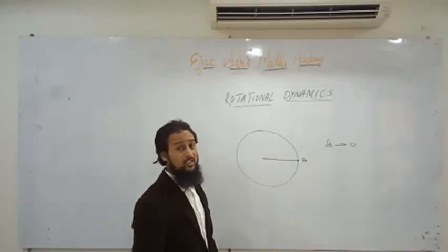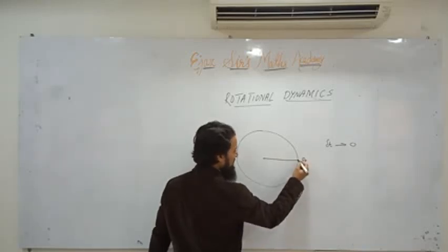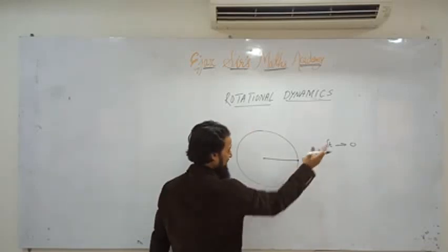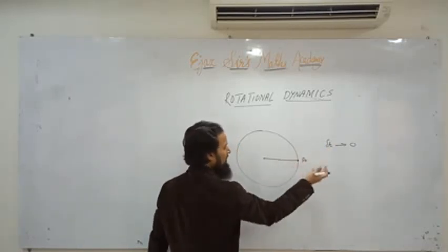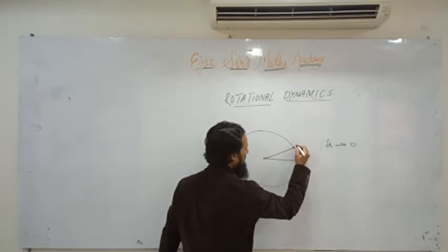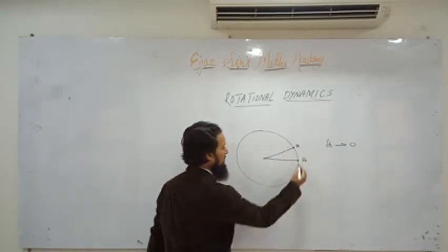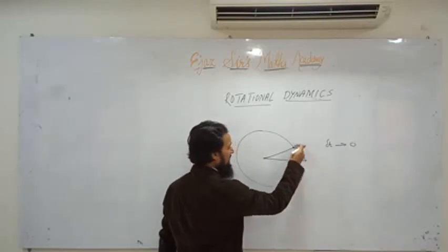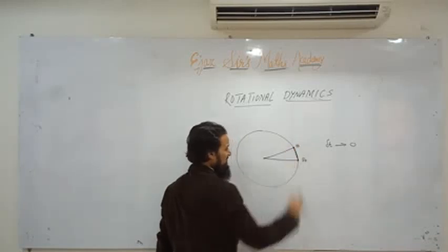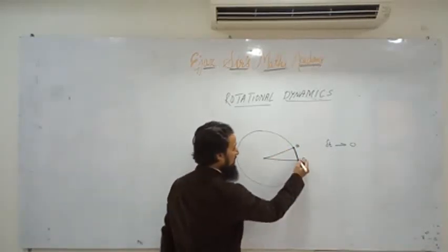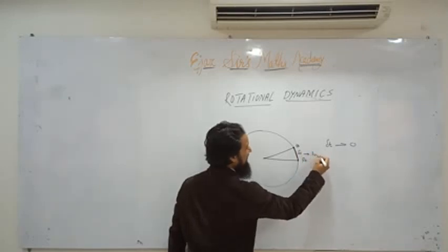In this very small time interval — microseconds, nanoseconds — the particle moves from point A to point B along the circumference. The shortest distance between point A and point B is called linear displacement. We denote this linear displacement by ds (del S).